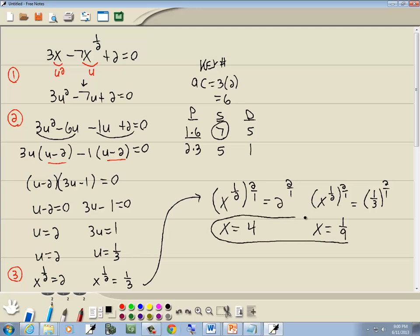Maybe. We have to check them, of course. When you raise both sides to a power, you always have to check your answer. If I put 4 in here, 3 times 4 is 12. If I put 4 to the 1 half, that's square root of 4, which is 2, so 7 times 2 is 14. So I have 12 minus 14, which is negative 2, plus 2 gives us 0. So that checks.